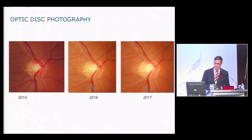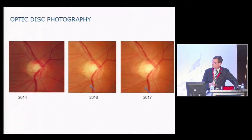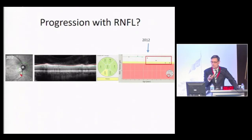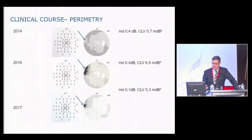Here we see a patient from 2014 to 2017, slowly progressing, indicated by the loss of retinal nerve fiber layer in the temporal inferior area. The optic disc rim looks quite nice, but the nerve fiber layer loss is quite well visible also on the BMO slides. When we follow up this patient with the visual field, in 2014 the patient still has a normal visual field, then there is a nasal notch in 2016 and 2017, with the 2016 visual field being worse than in 2017.